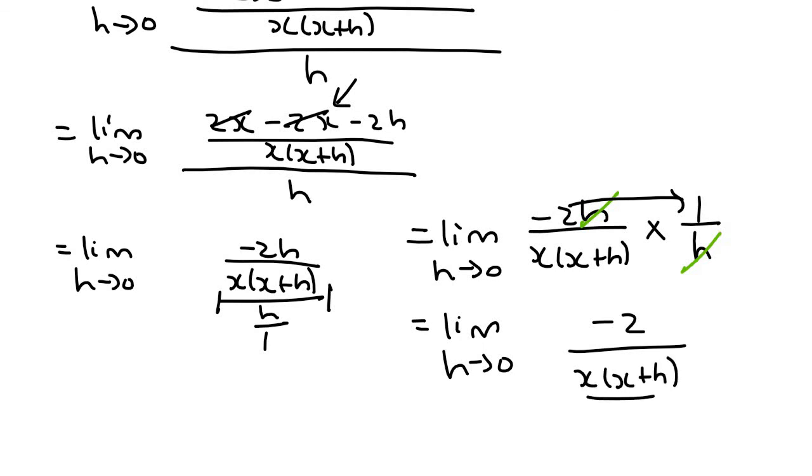You could multiply this bracket out if you want to. You could have done it earlier as well. I haven't let h become zero yet. So I'm still going to keep writing this limit over here on the side. And that's going to be minus 2 over x squared plus xh.